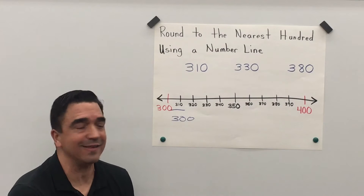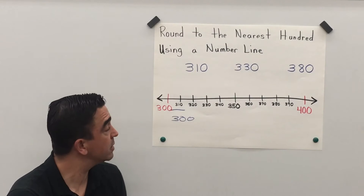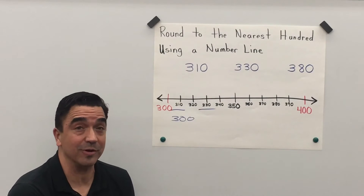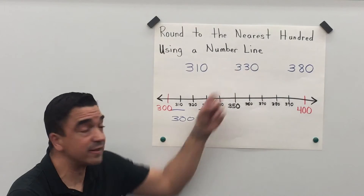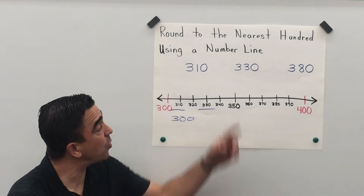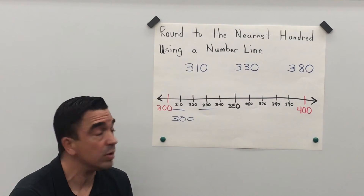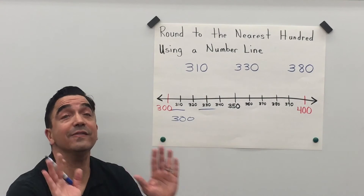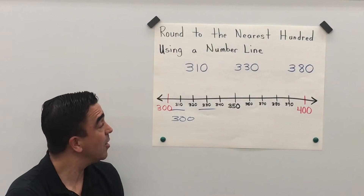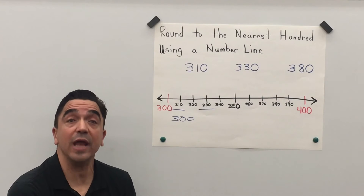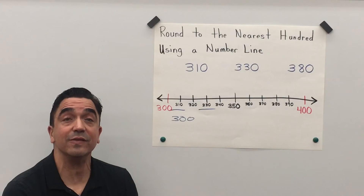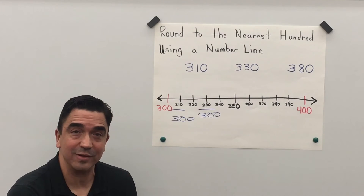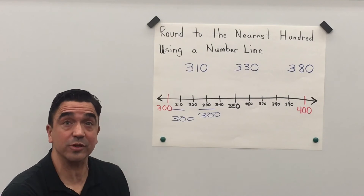Let's look at our second number: three hundred thirty. Once again, when I look at the tens place, it's going to tell the three what to do. The three in the tens place is going to tell the three in the hundreds place to stay the same. So when I round three hundred thirty to the nearest hundred, I get three hundred, and that is closer to three hundred.